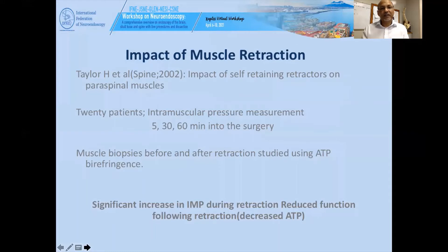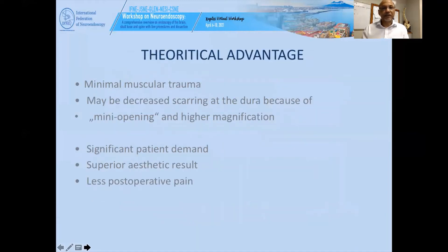Taylor looked at this in 20 patients, measuring intramuscular pressure at 5, 30, and 60 minutes into surgery. Muscle biopsies showed increased intramuscular pressure during retraction, demonstrating decreased ATP. So there is a theoretical advantage: minimal muscle trauma, possibly decreased scarring, a mini-open approach, and high magnification.